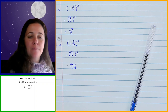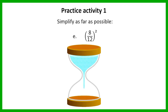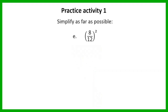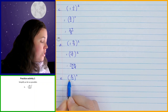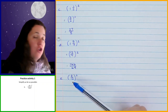Question E: here you've got 8 over 12, and you need to square it. Be careful with this one — remember, the instruction is to simplify as far as possible. Now, in this example, there are actually two ways that you can go about this. When you look at this fraction 8 over 12, I hope that you would have noticed that this is actually a fraction that can be simplified. All the examples we've done before now, we could not simplify the fraction that you started with.